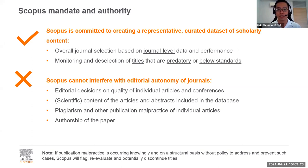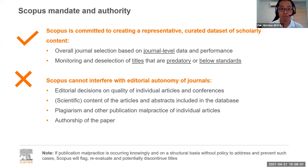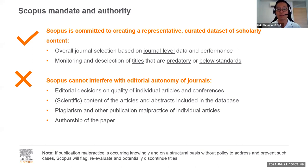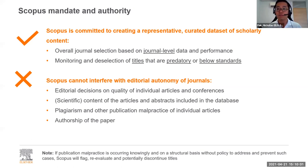Scopus cannot interfere with the editorial autonomy of journals. The quality of individual articles and conferences is an editorial decision by the journal's editors — something we cannot intervene in. We cannot decide what content of articles and abstracts is included, we cannot be responsible for plagiarism or other publication malpractice, and we are not responsible for authorship of papers. Where Scopus comes in is working with publishers of journals, not the editors.